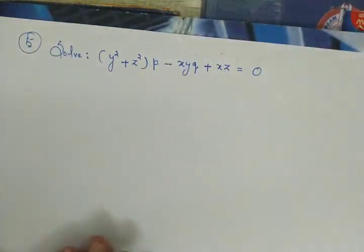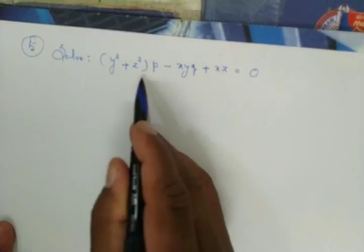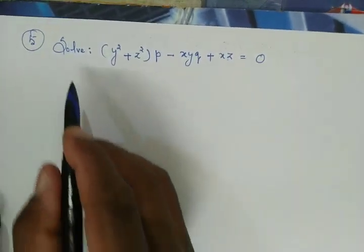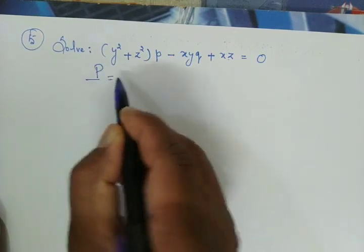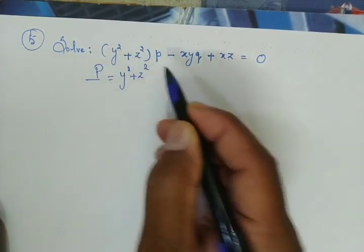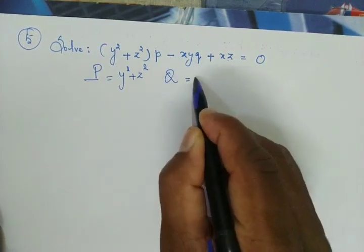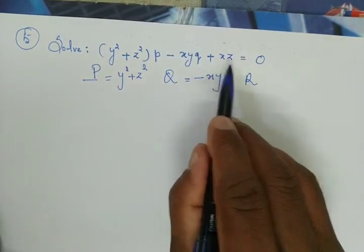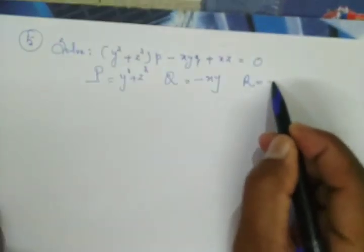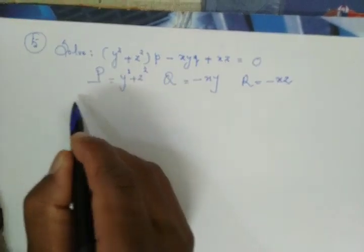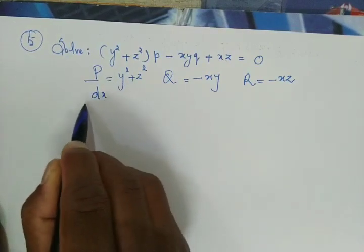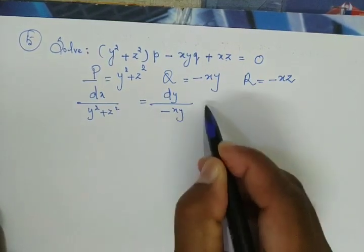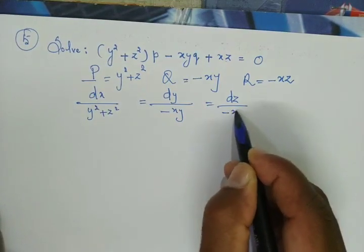The fifth problem is (y² + z²)p - xy·q + xz = 0. Here, capital P = y² + z², capital Q = -xy, and capital R = -xz (moved to the right side). The auxiliary equation is dx / (y² + z²) = dy / (-xy) = dz / (-xz).